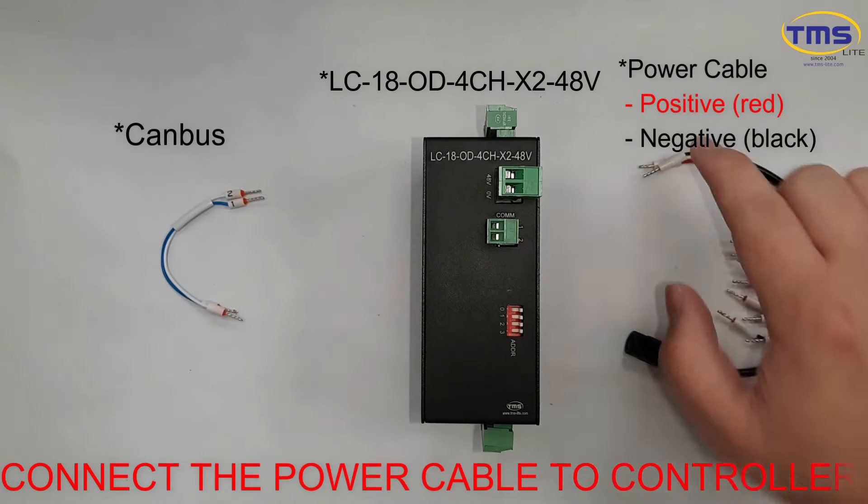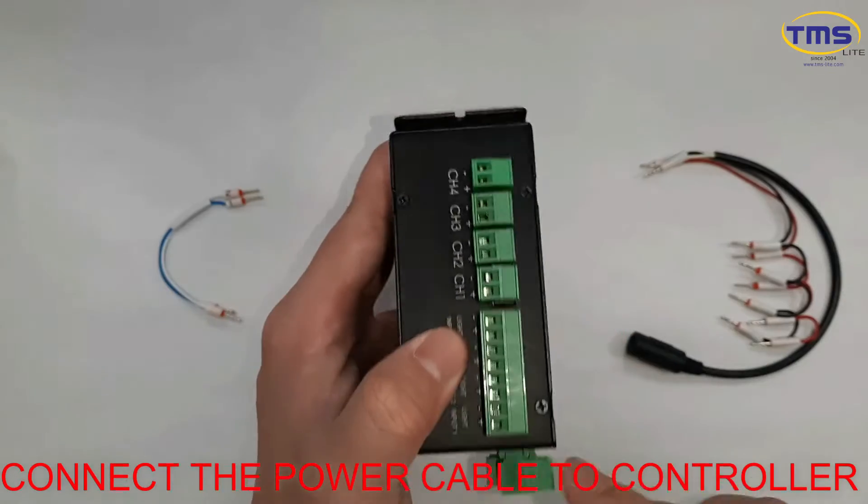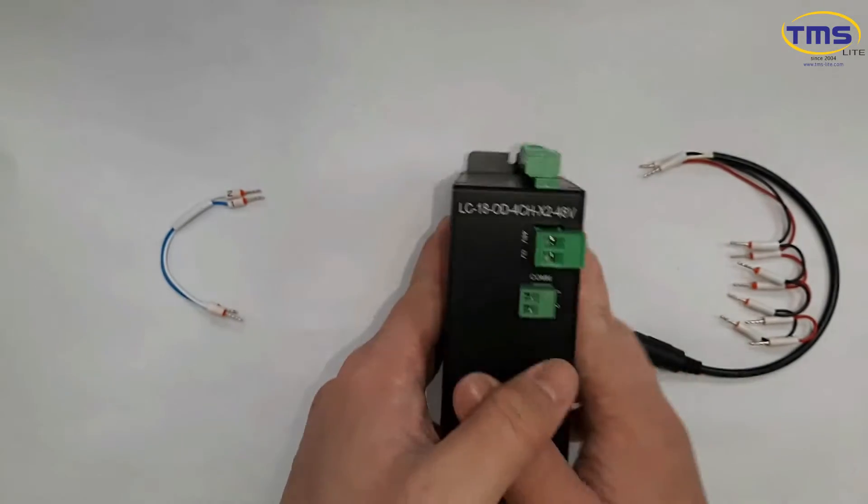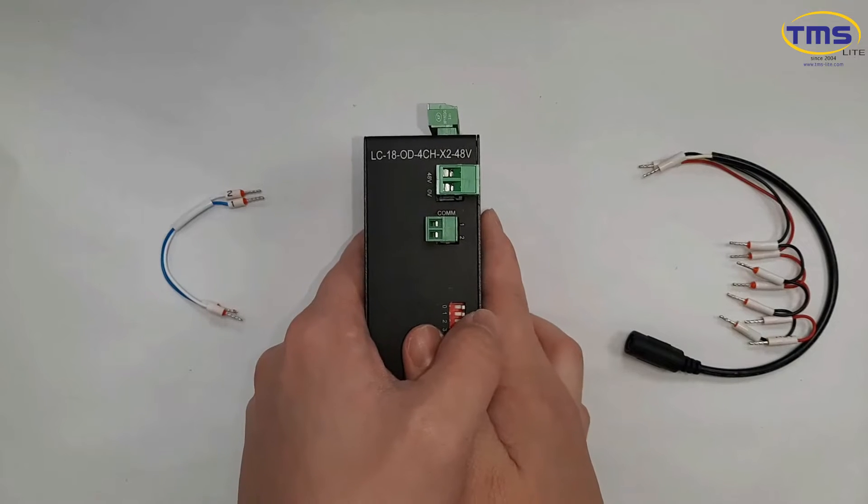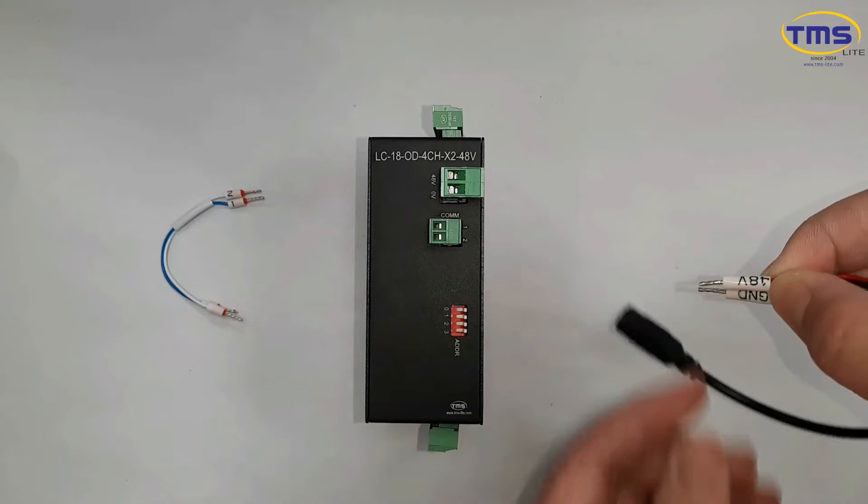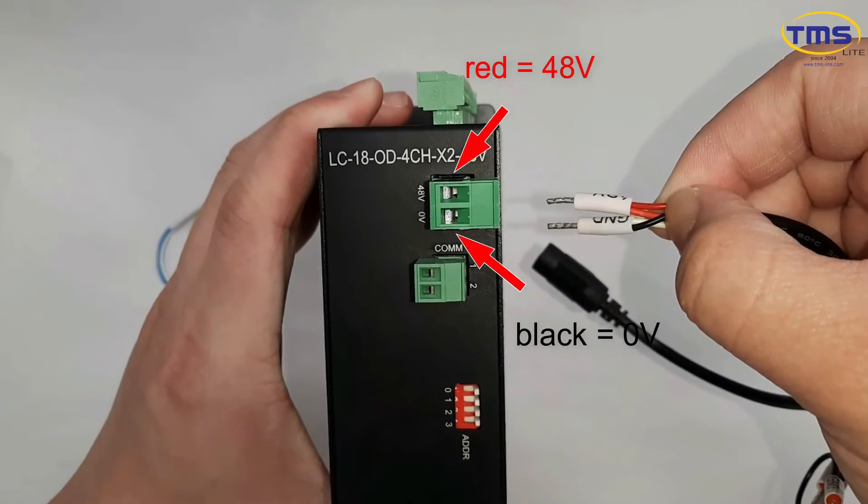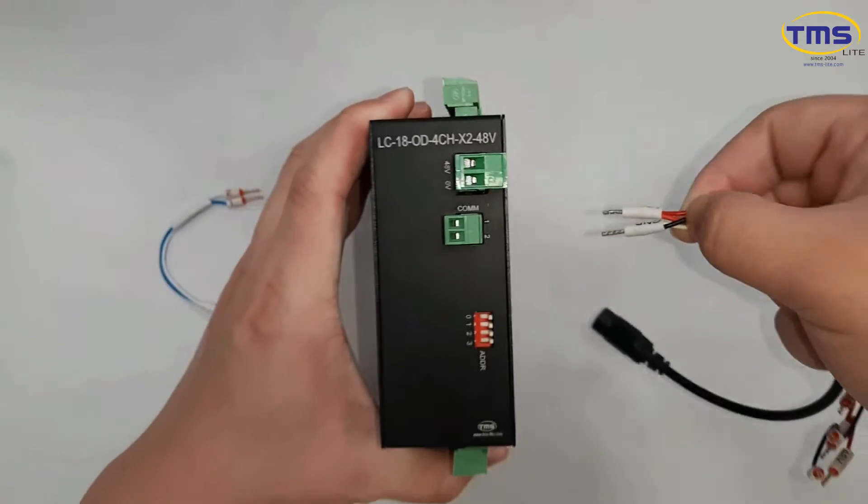First, connect the power cable to the controller. The red cable represents 24 volt and the black cable represents ground.